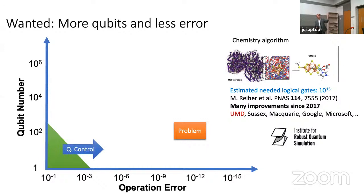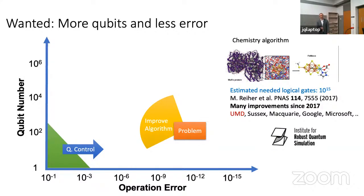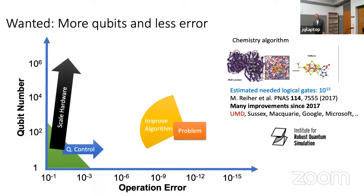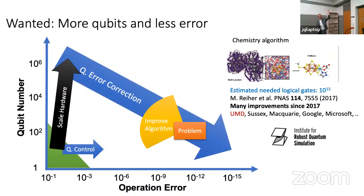The question is: how do we bridge the gap from where we are to where we want to be? As a Hamiltonian-oriented person I want to use Hamiltonians for quantum control to reduce error, but there's a limit — spontaneous emission, environmental noise. We can try to improve the algorithm, but hard algorithms require high precision and you can't push too far without losing precision. The standard approach is: many many more qubits, slightly better error, then quantum error correction all the way down.